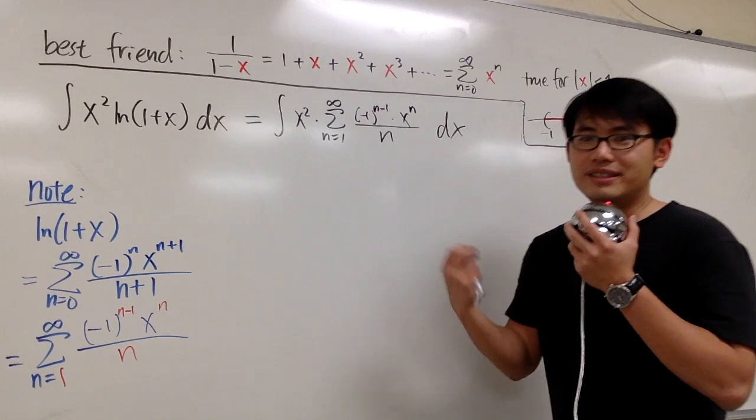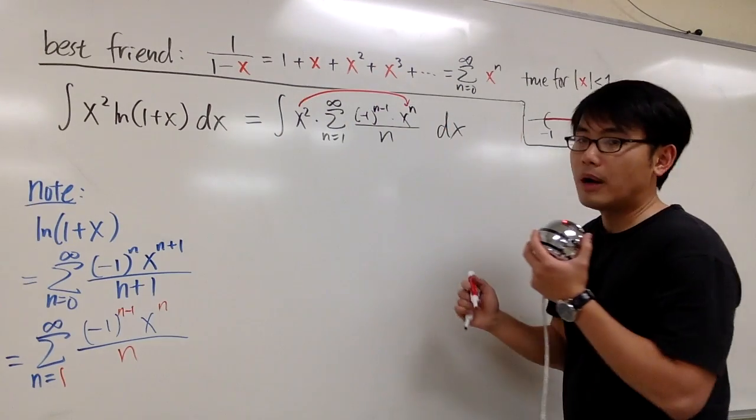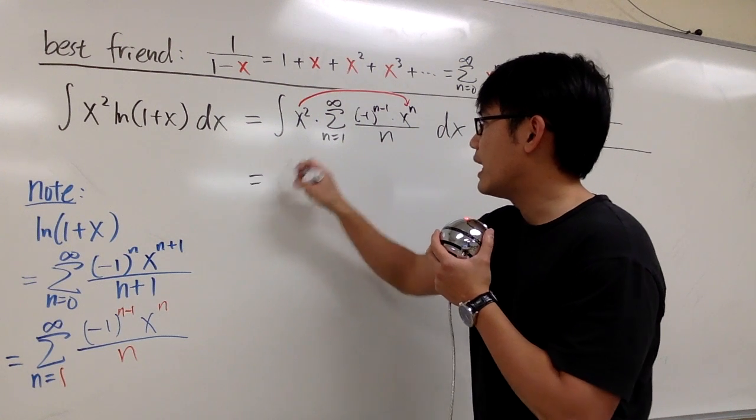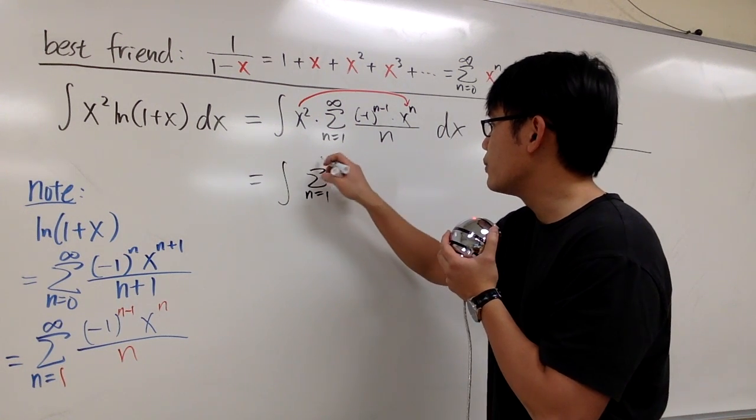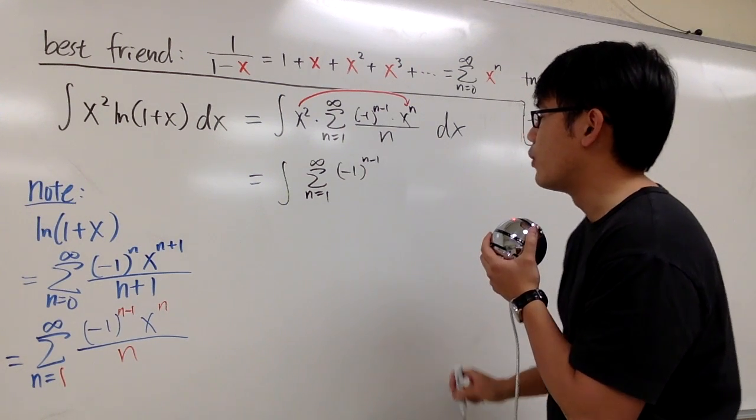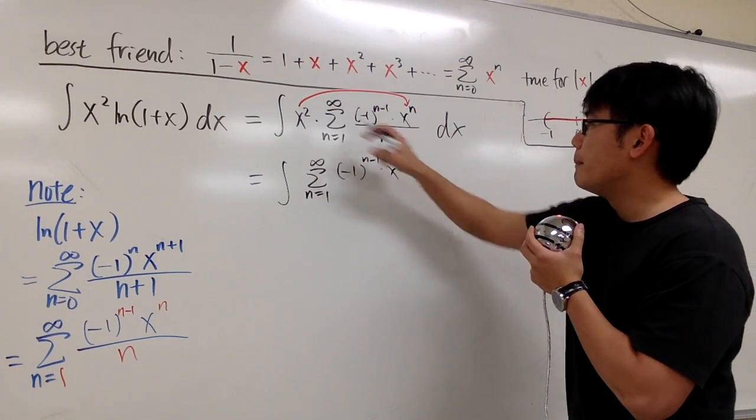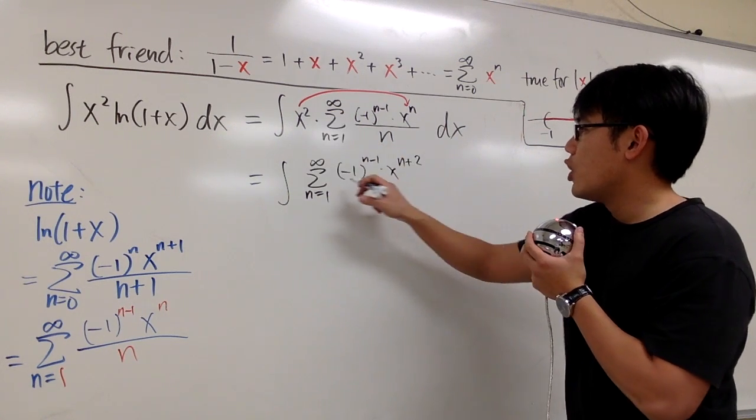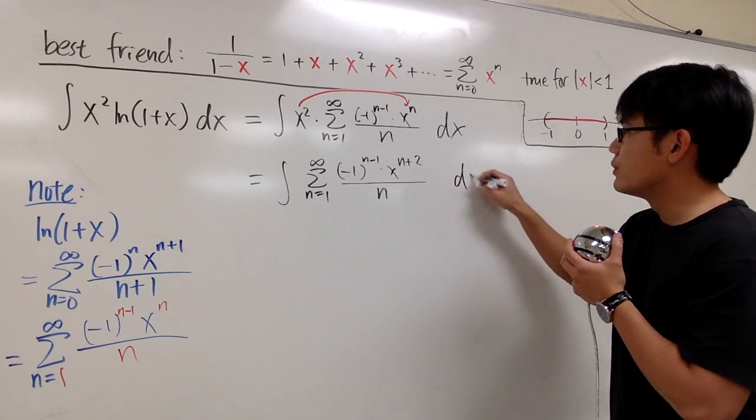And then we work this inside out. Here we have the x squared, you multiply with this x to the n power, and then we will have integral sigma when n goes from 1 to infinity. This is negative 1 to the n minus 1 power, and then we will have times x to the n plus 2 power over n on the denominator, and this is still dx.